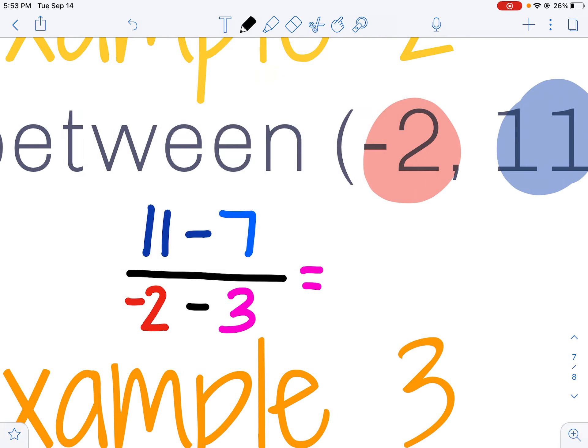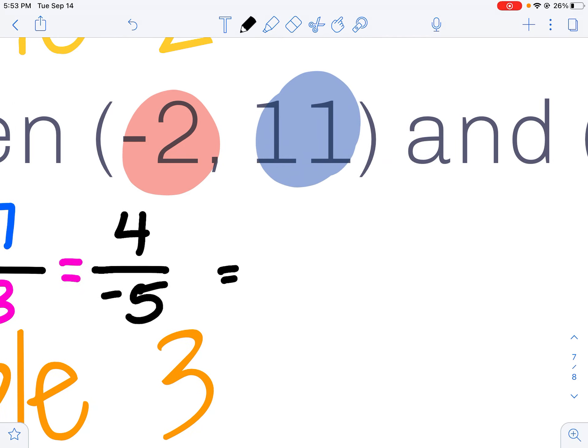I'm going to do some quick calculations then. So 11 minus 7 leaves me with 4. Negative 2 minus 3 more leaves me with negative 5. Because I'm civilized, I write my negative in my numerator, so I get negative 4/5.